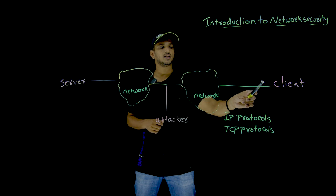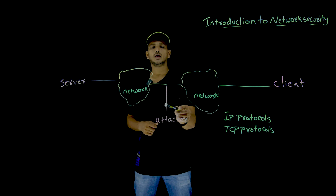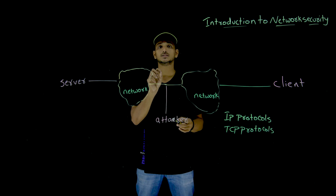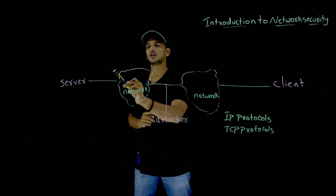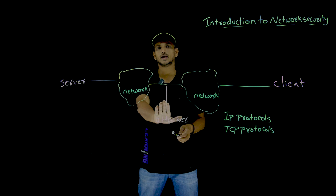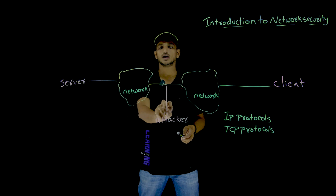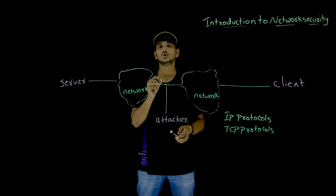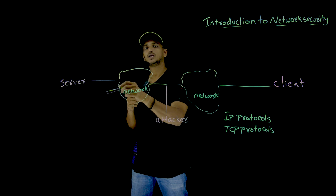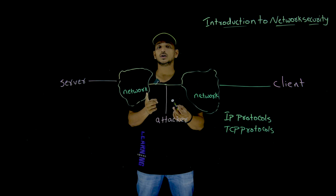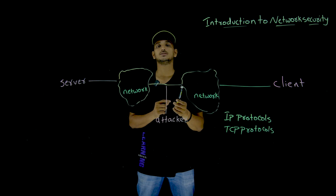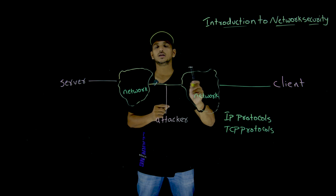Whenever the messages are passing over the internet, the attacker may be anywhere in the middle and they can watch the messages passing between client and server. In order to stop this attacker from checking the data, we have to encrypt the message and send it so that the server can decrypt it. In order to do that encryption and decryption, the client and server have to exchange the keys.